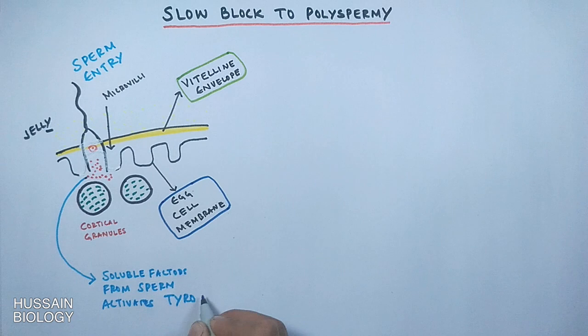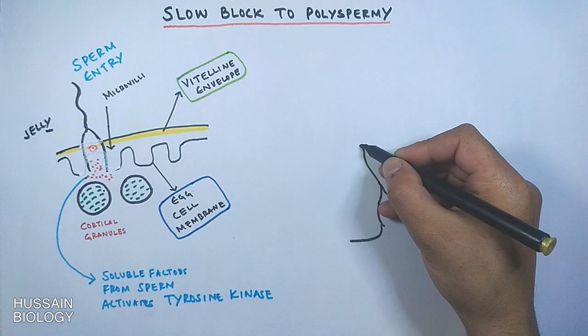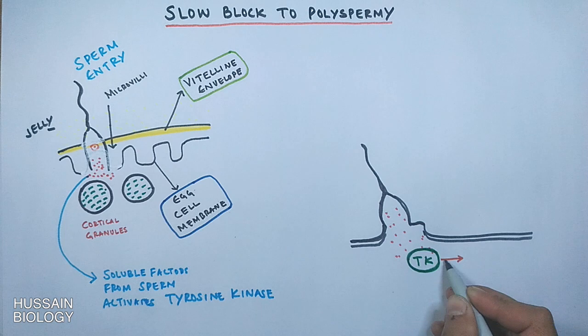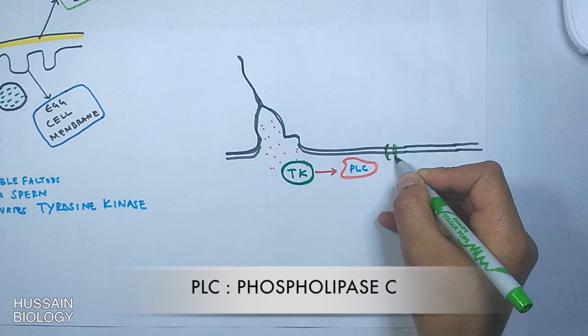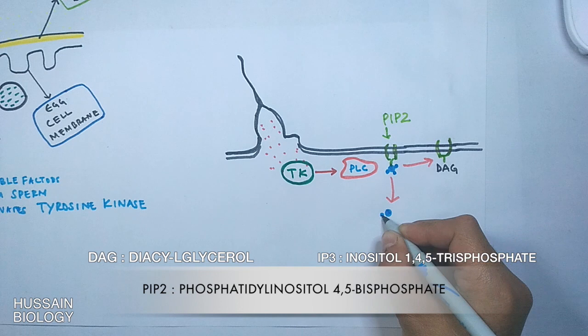In the mechanism of slow blocks to polyspermy, the sperm releases many soluble factors, and these factors are able to activate tyrosine kinase. The activated tyrosine kinase further activates PLC, and this PLC in turn cleaves the membrane-bound PIP2 into two components: DAG and IP3.